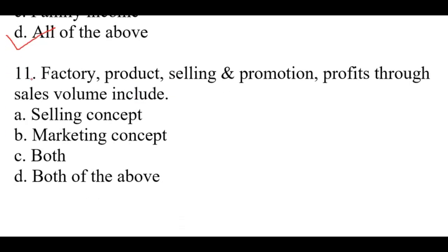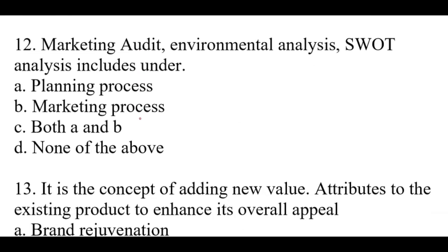Question number eleven: Factory product, selling and promotion, profits through sales volume includes — right option is A. Question number twelve: Marketing audit, environmental analysis, and SWOT analysis includes under — right option is A: Planning process.